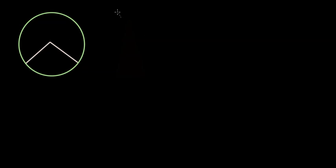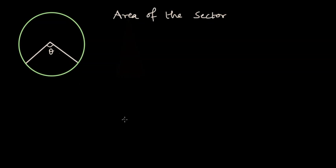Let us learn how we can arrive at the formula for the area of the sector. What is a sector? A sector is something like the piece of a pizza, which looks like this and has some angle theta at the center. We are interested in finding out the area of it — this pink shaded region.